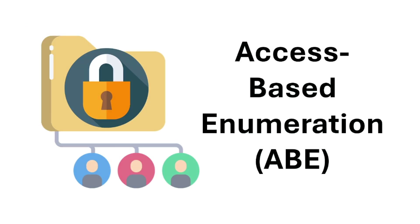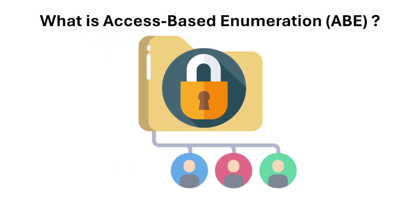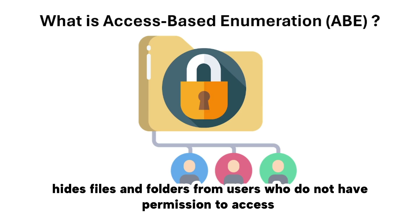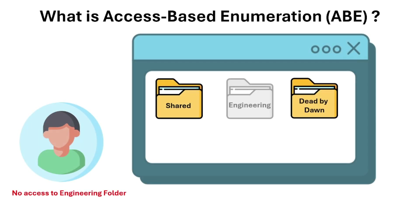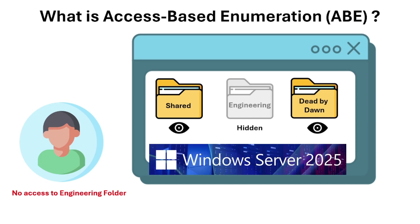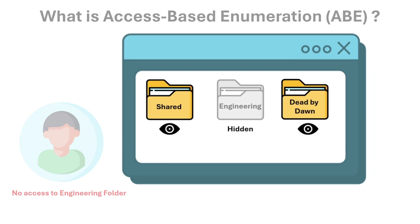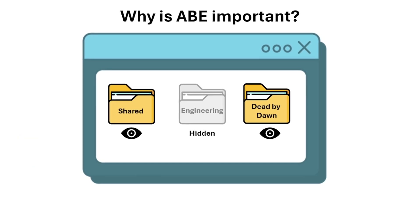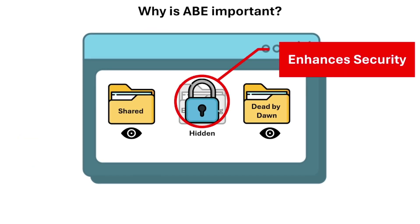What is access-based enumeration, or ABE? Access-based enumeration is a feature in Windows Server that hides files and folders from users who do not have permission to access them. ABE hides files and folders from users who don't have access, and users only see what they are allowed to open. It's available on Windows Server for shared folders.